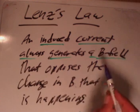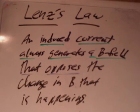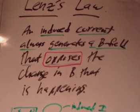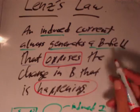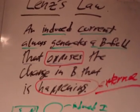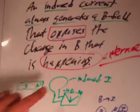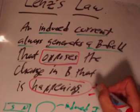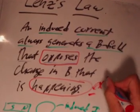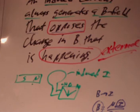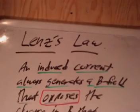So it's going to generate its own B field that opposes — and 'opposes' is a huge word in Lenz's Law; it's really the epitome of the law. That opposes the change in the B field that's happening. The 'happening' is some external change, for instance because I'm moving the magnet — that's the external change in magnetic field that I'm forcing on the coil. So an induced current always generates a B field that opposes the change in the magnetic field that's happening.